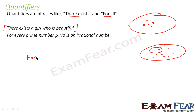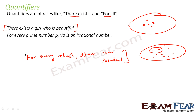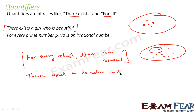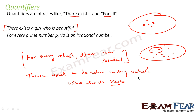For example, if I say 'for every school there are students' — the statement is true, because you take any school, there has to be a student. If there is no student, there is no school. But if I say 'there exists a teacher in my school who teaches maths' — in your school there are so many teachers, but only a few of them teach maths.